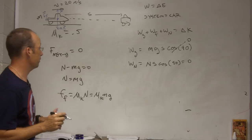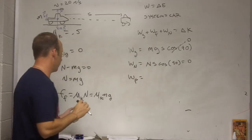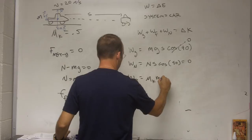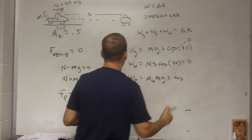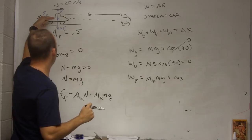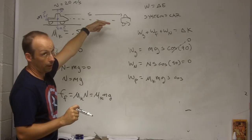So, now we just have the work done by friction. Well, that's going to be the frictional force, mu k, mg, times the distance, s, times the cosine of the angle between them, and it's not zero. s is this way,